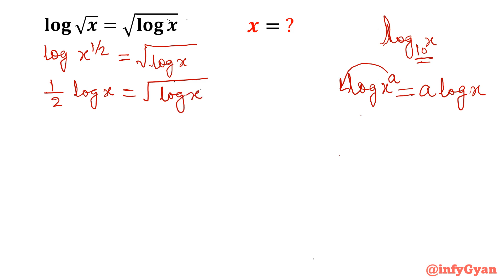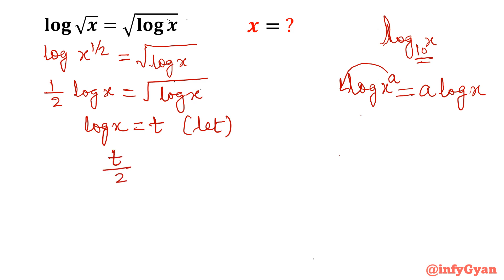Now let us use substitution: let log x equal t. So the equation becomes t over 2 equals square root of t.